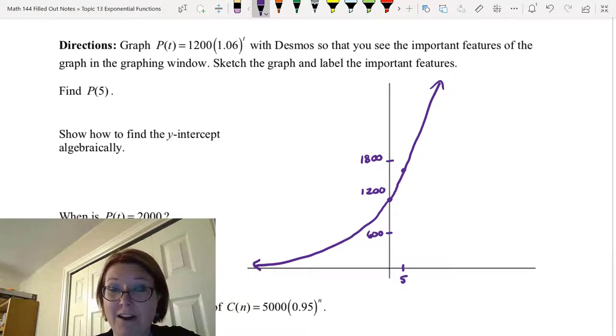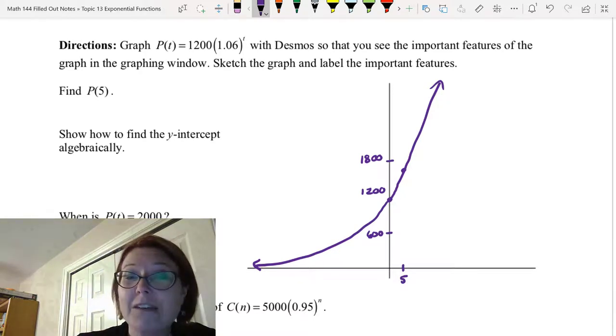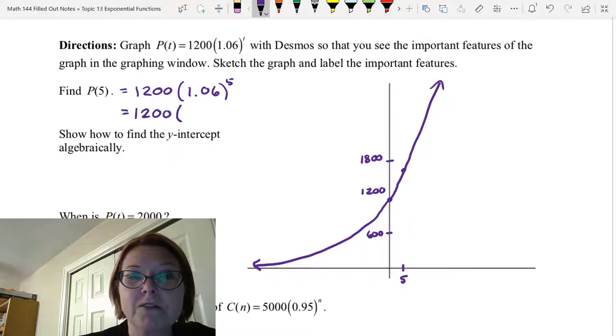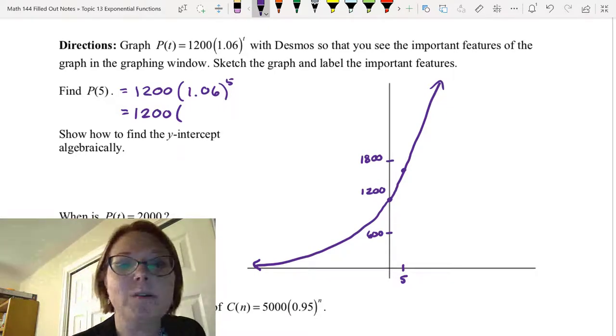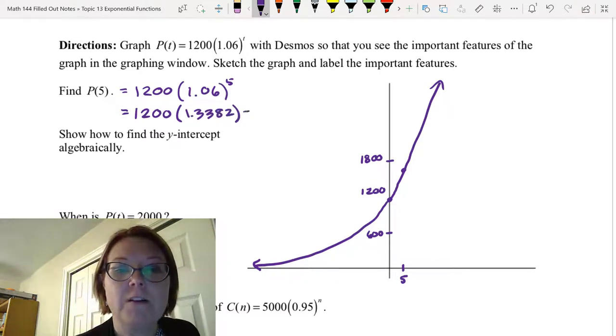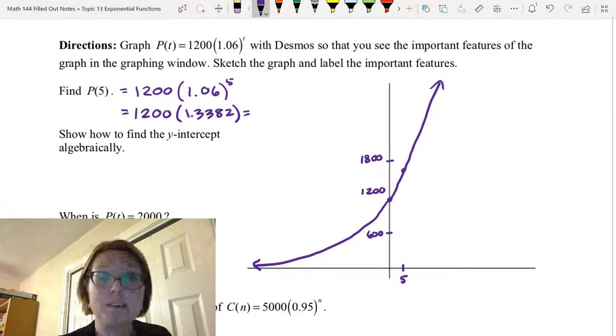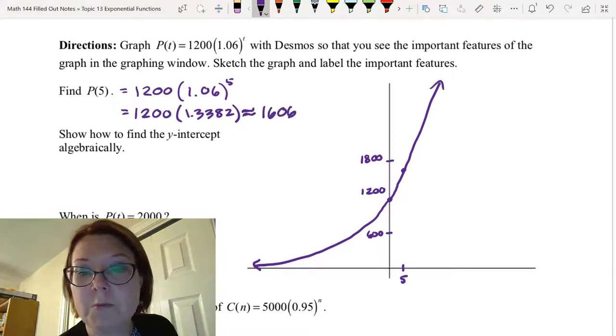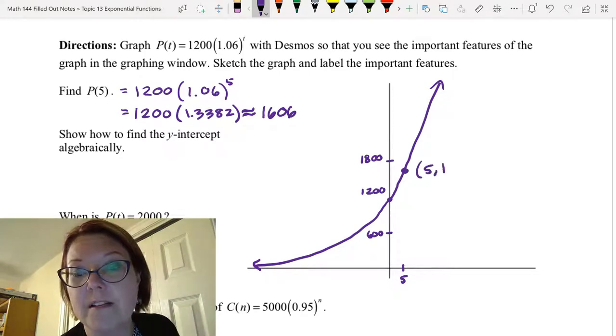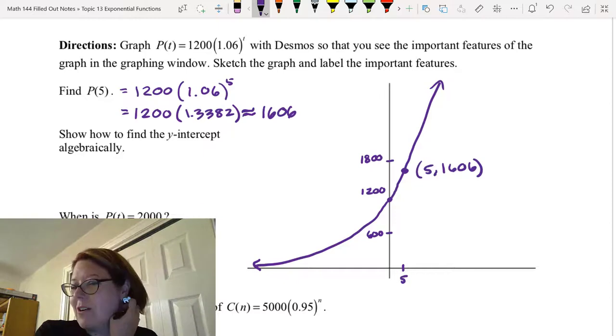All right, now we want to actually find P(5), and we actually looked at that point just a second ago and know it's going to come out to be 1605. But let's go ahead and go through the calculations so that I'm sure you know what you're doing here. We would do P(5) = 1200 times 1.06 to the fifth power. So when we calculate that, you want to do the power first. So 1.06 to the fifth power, which gives us 1.3382, and that's a rounded number. And then I would need to do 1200 times that 1.3382, which gives us approximately 1606. So this point P(5) is (5, 1606). And that's certainly what we saw on the graph in Desmos as well.